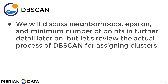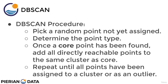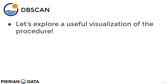We'll discuss neighborhoods, epsilon, and minimum number of points in further detail later. For now let's review the actual DBSCAN procedure for assigning clusters. The procedure is simple: first, pick a random point that has not yet been assigned a cluster label or point type. Then determine the point type given the conditions — whether it's a core, border, or outlier. Once a core point has been found, add all directly reachable points — any continuous core points or border points — to the same cluster. Repeat until all points have been assigned to a cluster label or as an outlier. Note that core and border are two different point types but they can belong to the same cluster. Probably the best way to fully understand this is to explore a useful online visualization of the procedure.